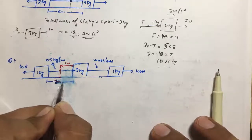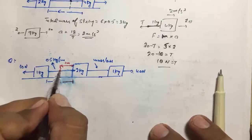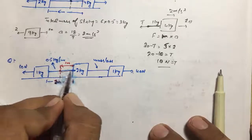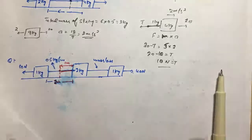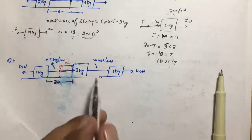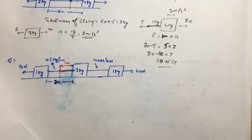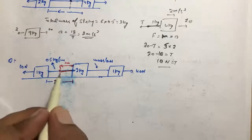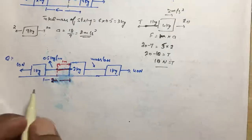यहाँ पर 2 meter की string है, और 1 meter पर tension बतानी है। String का mass 1 kg per meter है और दूसरी string mass-less है। Screen pause कीजिए, इसको solve कीजिए, फिर solution देखिए। इस point पर string की tension बतानी है।